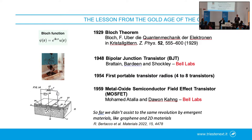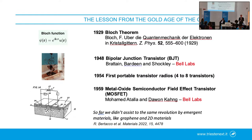But immediately after — 1948, just after the Second World War — there was the invention of the bipolar junction transistor, the BJT, by three researchers at Bell Labs. And in 1954, the first portable transistor radio appeared on the market. Just four transistors, but enough to build a new radio. So in just about 20 years, something of that order.